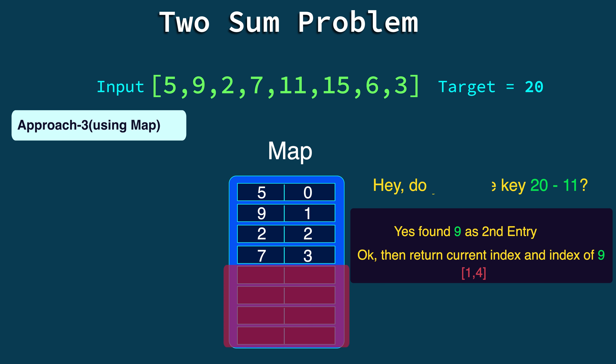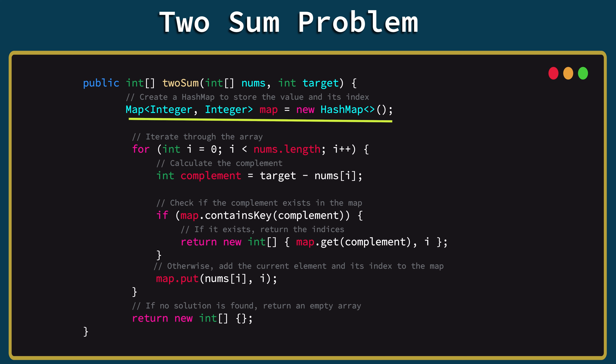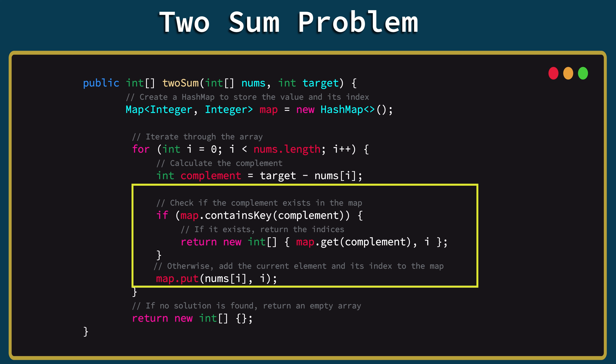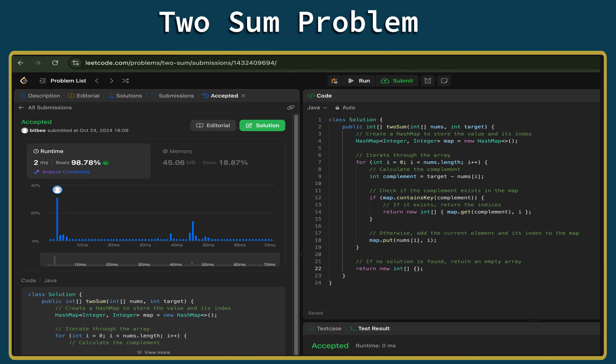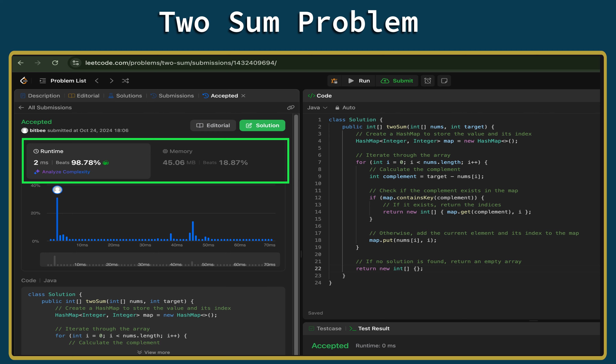In the HashMap code, inside the twoSum method I declare a HashMap (which implements the Map interface). In the for loop, I calculate the complement as target minus the current number, then check map.containsKey(complement). If true, I return the result — the stored index from the map and the current loop index i. Running this on LeetCode, it took just 2 milliseconds and beat 99% of solutions. That's what we were looking for — achieved using the Map data structure. Thanks for watching and see you in the next one!